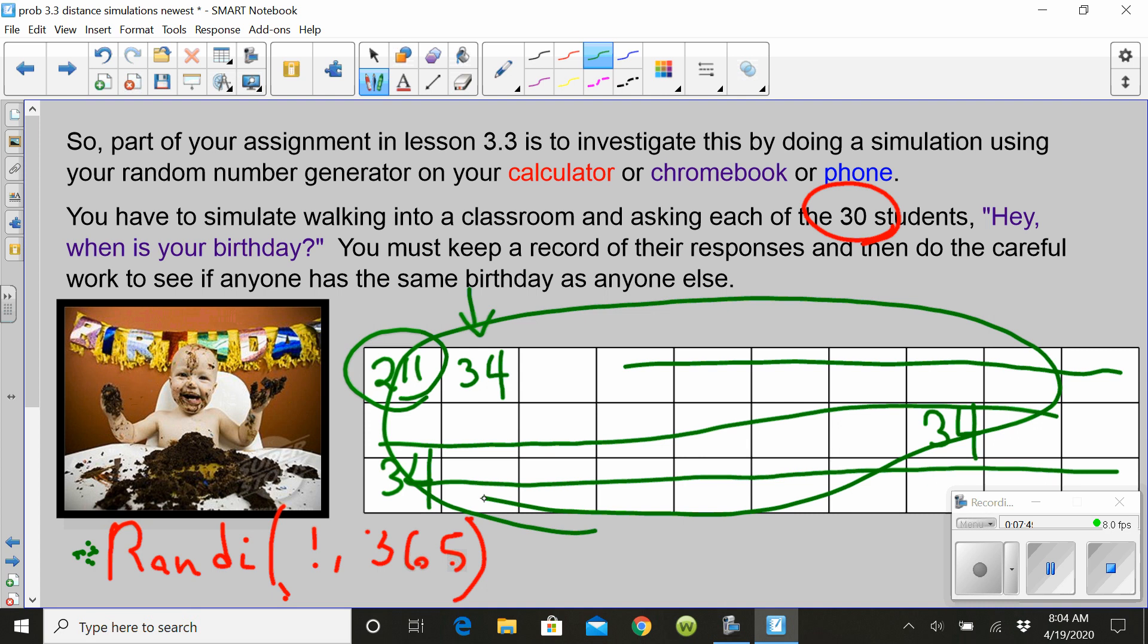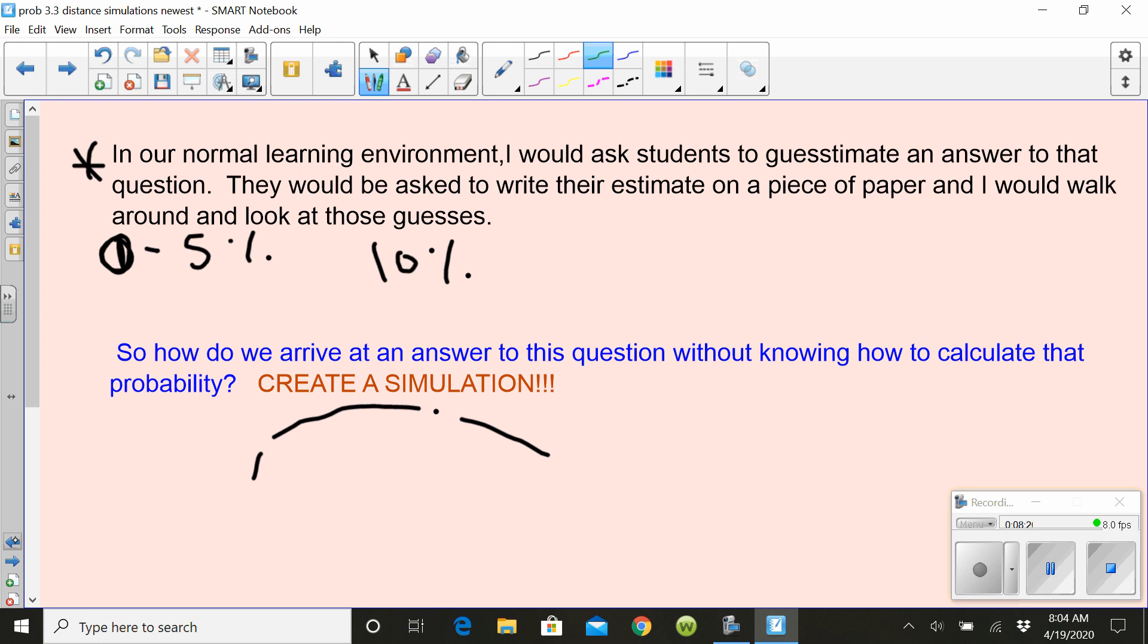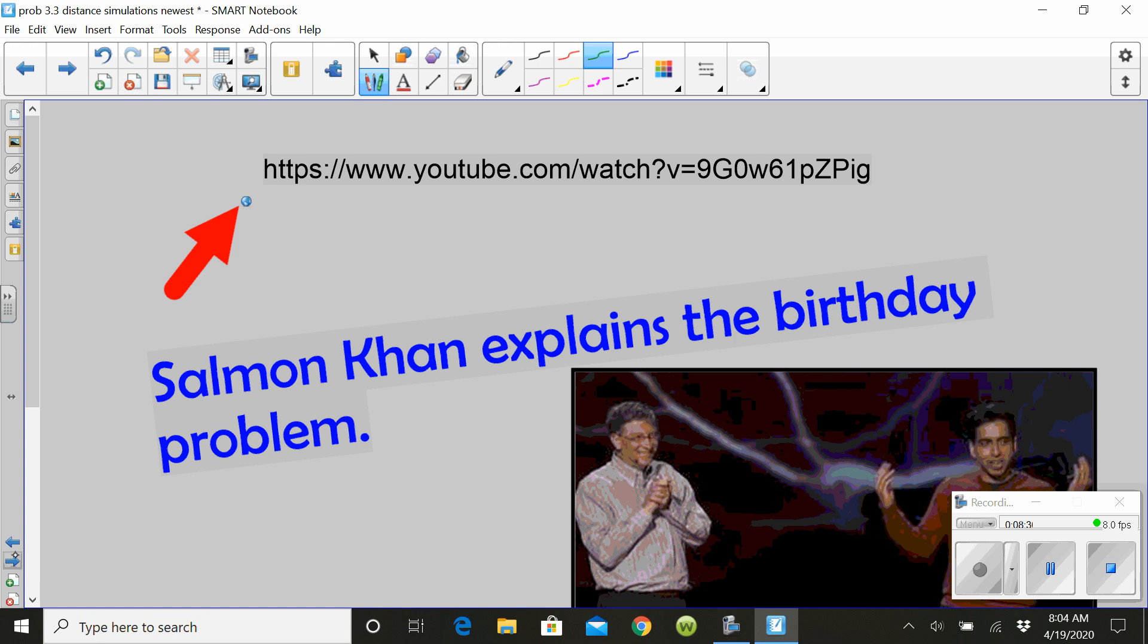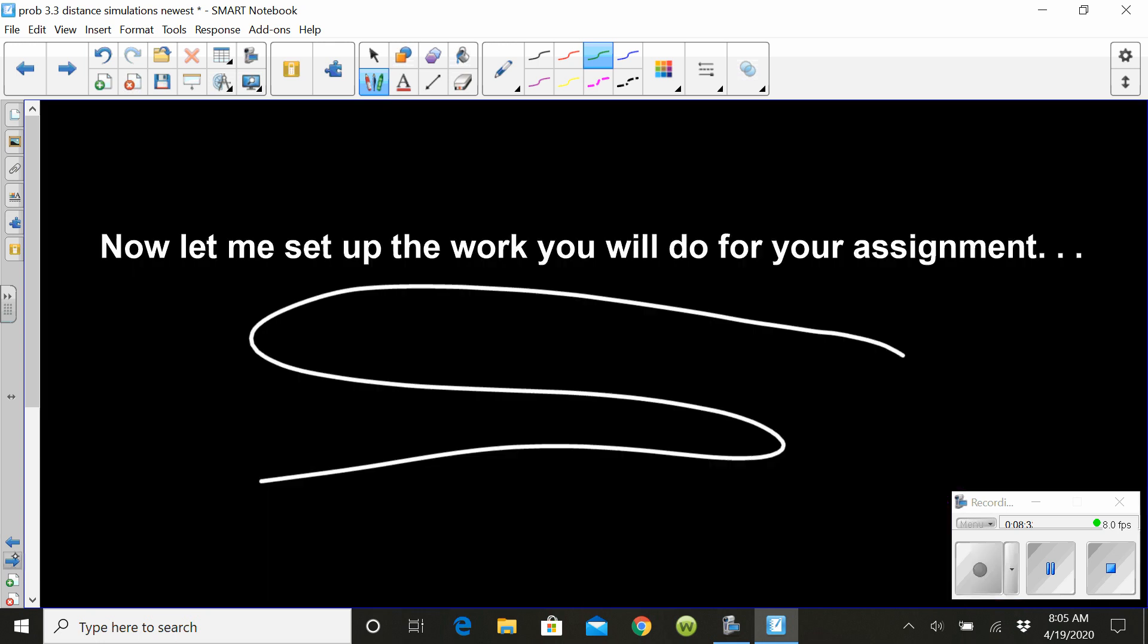What I'd like to do when we meet together during our class time online in distance learning, we're going to go around and report our results to everybody else. So I need everybody to do that experiment twice, two different classrooms, and see if there's common birthdays or not. I'll bet if we pool our data together, we can arrive at a pretty good answer to the question. How likely do you think it is that there's common birthdays? I'll bet if we put our data together, we'll get a pretty good answer.